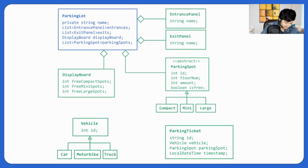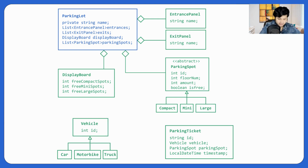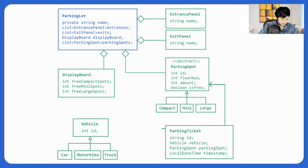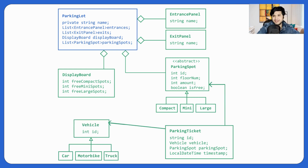Let's build the relations. ParkingTicket has a parking spot as well as a vehicle. We've also forgotten the main actors — Admin and ParkingAttendant — so let's go ahead and build those.